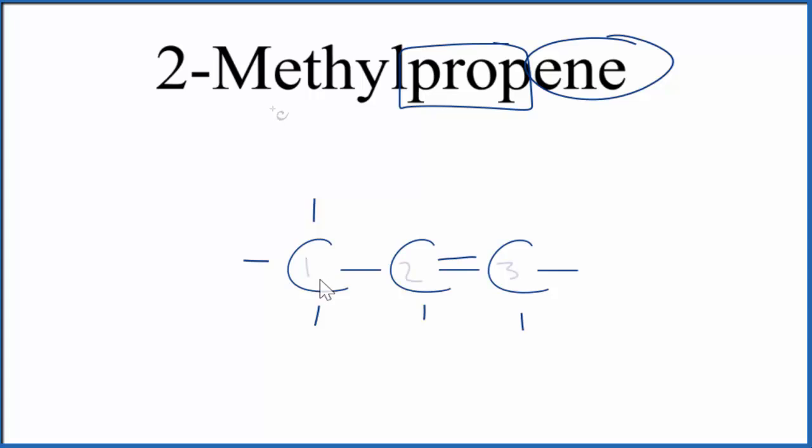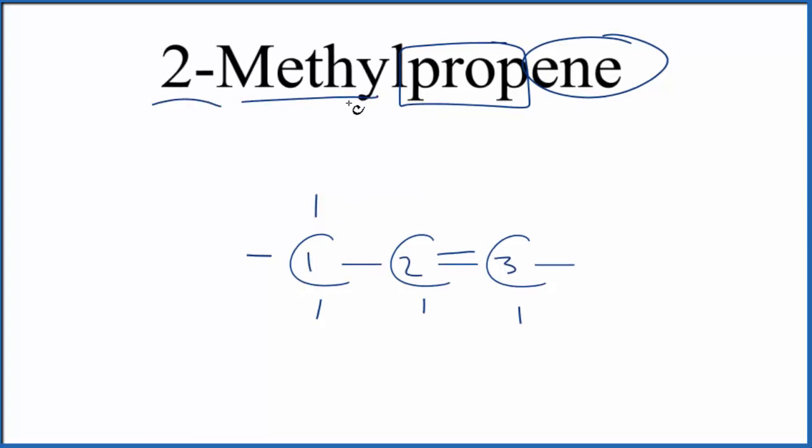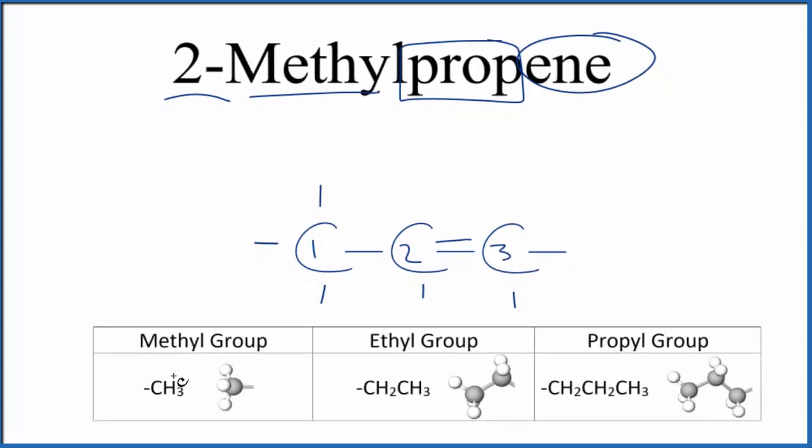Let's number each of the carbons, and on the second carbon, we put our methyl group. A methyl group is just CH3, a carbon with three hydrogens. We're going to put that on the second carbon here. Remember, each carbon can only have four bonds, so let's adjust. And now this is the structure for 2-methylpropene. We have our three carbons with a double bond, that's the propene. On the second carbon, we put our methyl group, making sure each carbon only has four bonds.